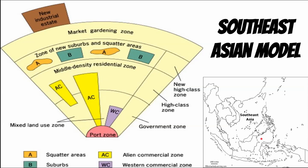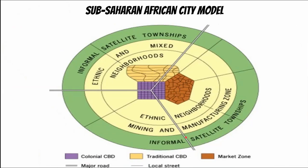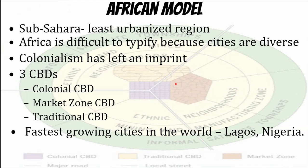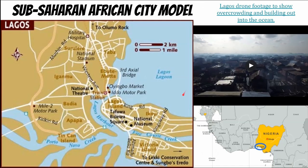In Southeast Asia, the focus is on port zones and special economic zones, tied to the colonial history of colonizers bringing in goods. The last model is the sub-Saharan African city model, made by Harm Dibli. It has a traditional CBD, then a market zone, then the colonial CBD from the imperialist age. Most of these cities are found along the coast. You can see Lagos, Nigeria very much subscribing to this African city model.